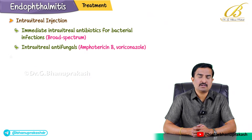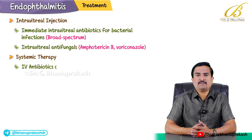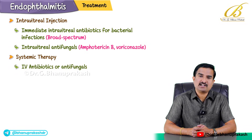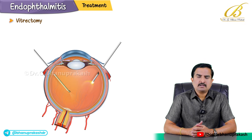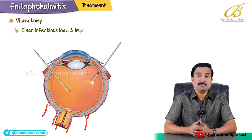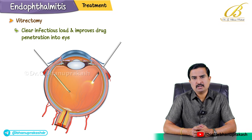Additional intravenous antibiotics or antifungals may be needed if there is systemic involvement or risk of widespread infection. Vitrectomy — surgical removal of the vitreous humor — helps to clear the infectious load and improves drug penetration into the eye.